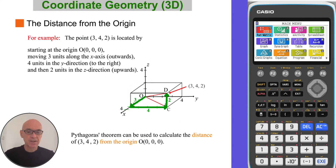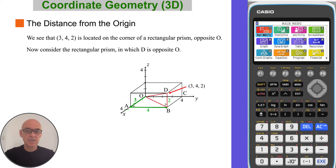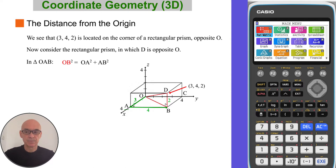Pythagoras' theorem can be used to calculate the distance of the point (3, 4, 2) from the origin O — that's the distance OD shown on the diagram. We see that the point (3, 4, 2) is located on the corner of a rectangular prism, diagonally opposite O. Within this prism, if we consider triangle OAB, which is right-angled at angle A, we can use Pythagoras' theorem to find the length of OB, the hypotenuse. By squaring the sides of length 3 and 4 and adding the results together, we get 25. So the length of OB is the square root of 25, which equals 5.